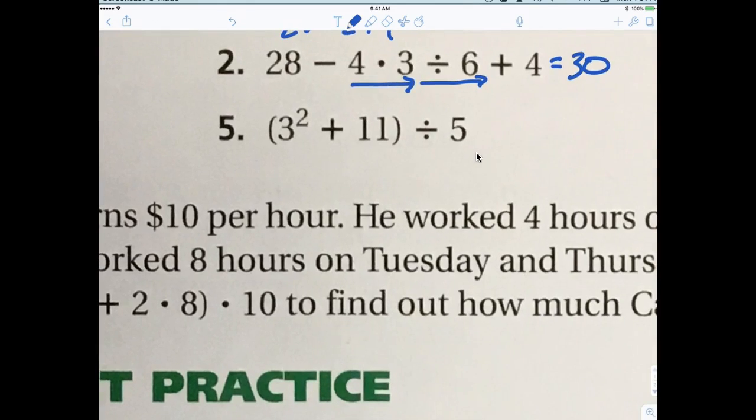We're practicing our mental math, right? That's what I'm trying to get you to do. Now sometimes you may have to write a couple things down. Chloe. First, you do the exponent, which is 9 plus 11, which is 20. Good. Divided by 5 is... I'm so proud of myself.